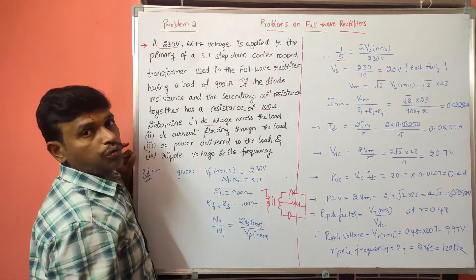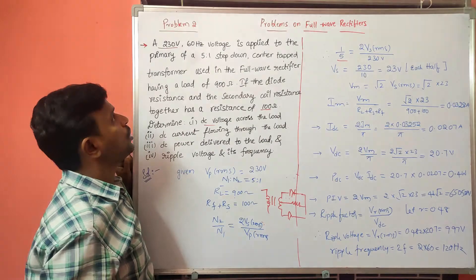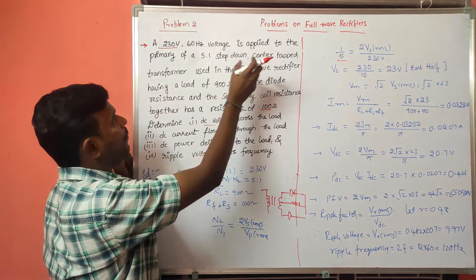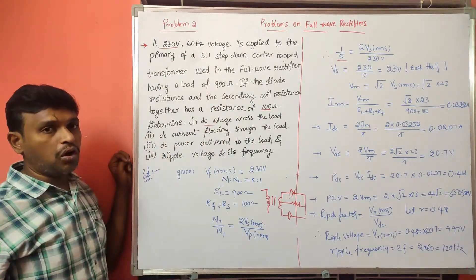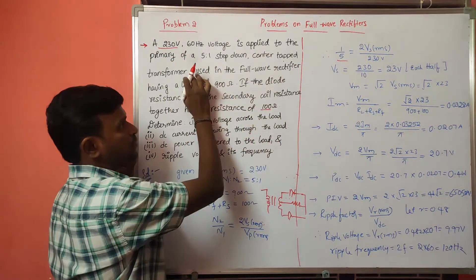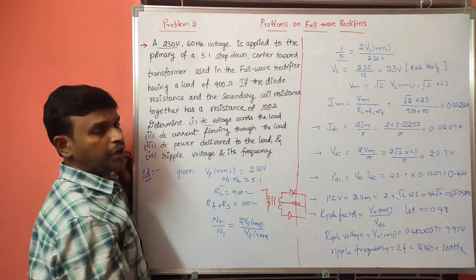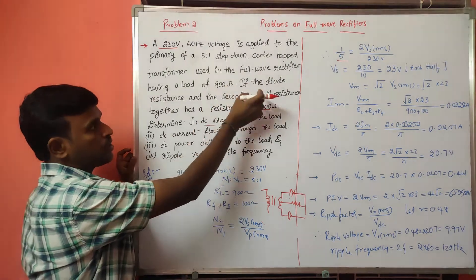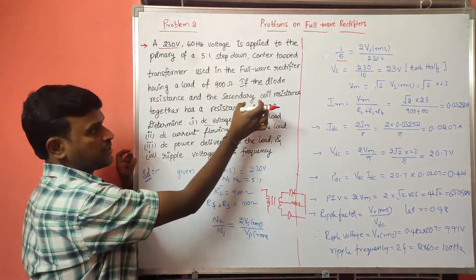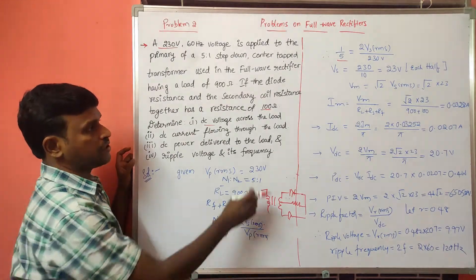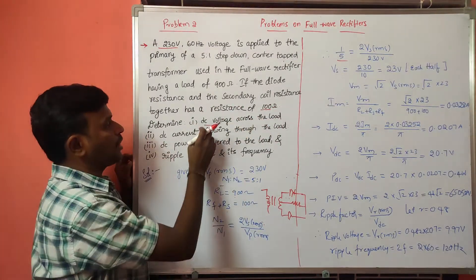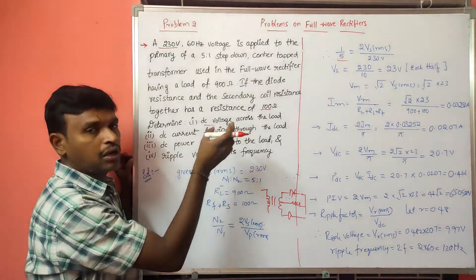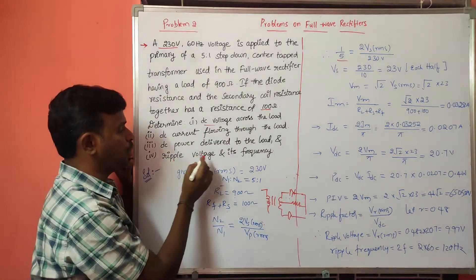Now we have problem number 2. A 230 volts, 60 hertz voltage is applied to the primary of a 5-to-1 step-down center-tap transformer used in a full wave rectifier, having a load resistance of 900 ohms. The diode resistance and secondary coil resistance together have a resistance of 100 ohms. Calculate the DC voltage across the load, DC current through the load, DC power delivered to the load, ripple voltage and its frequency.